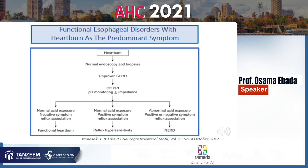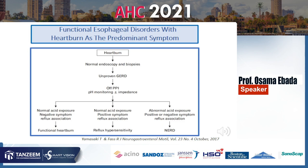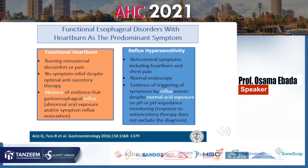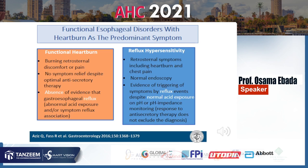In patients with heartburn, normal endoscopy, and unproven GERD, perform off-PPI impedance or pH metry. If symptoms are not associated with reflux, it is functional heartburn. If symptoms are associated with reflux, it is reflux hypersensitivity. If there is abnormal acid exposure with symptom association, it is NERD. The key distinction: no reflux association means functional heartburn; reflux association means reflux hypersensitivity.